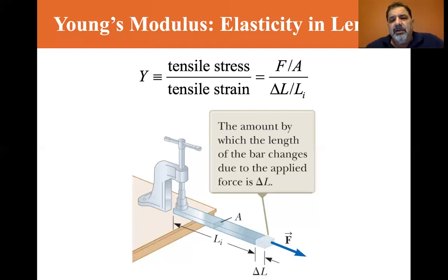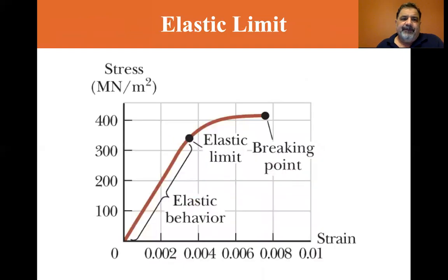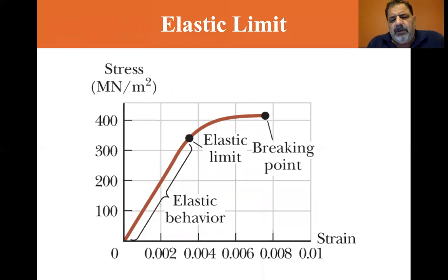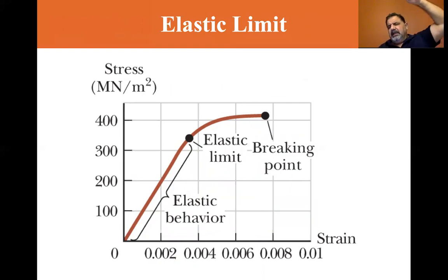The L_i is the original length, and Delta L is the increase in length — that's the Young's modulus. We talked about the elastic limit when we discussed springs. If you go beyond the elastic limit of a spring, you deform it, possibly break it. It's the same here — you pull a straight piece of wire until you reach the elastic limit.